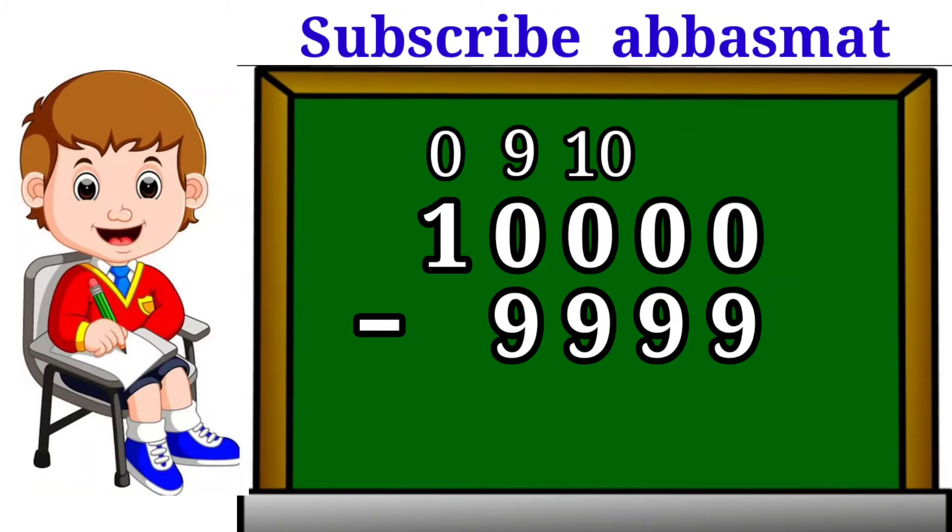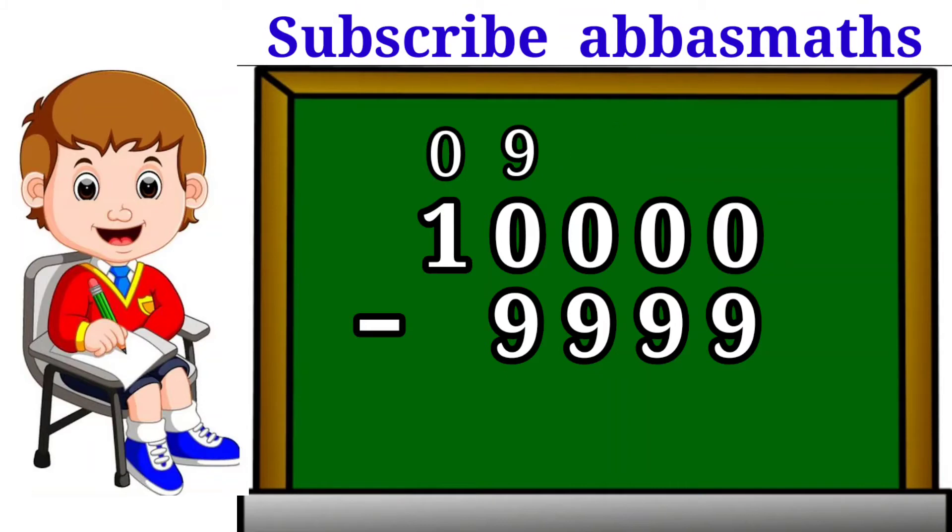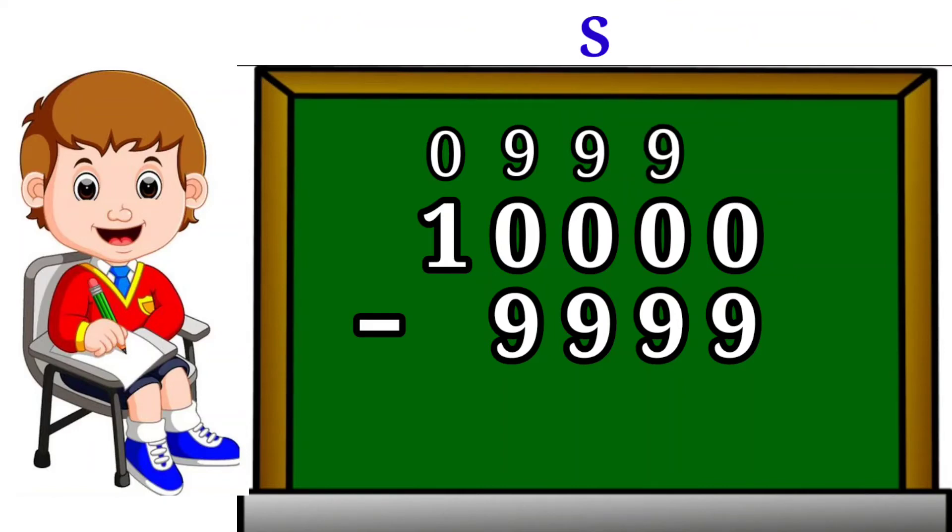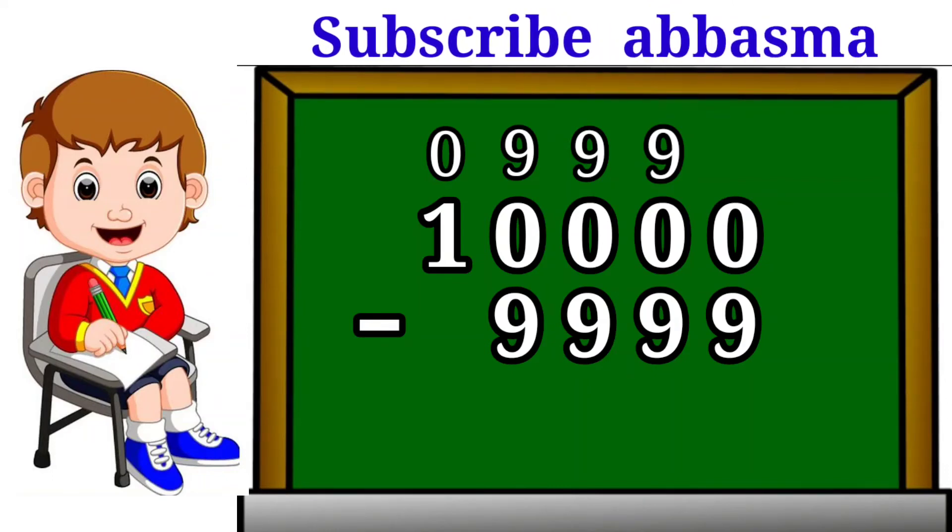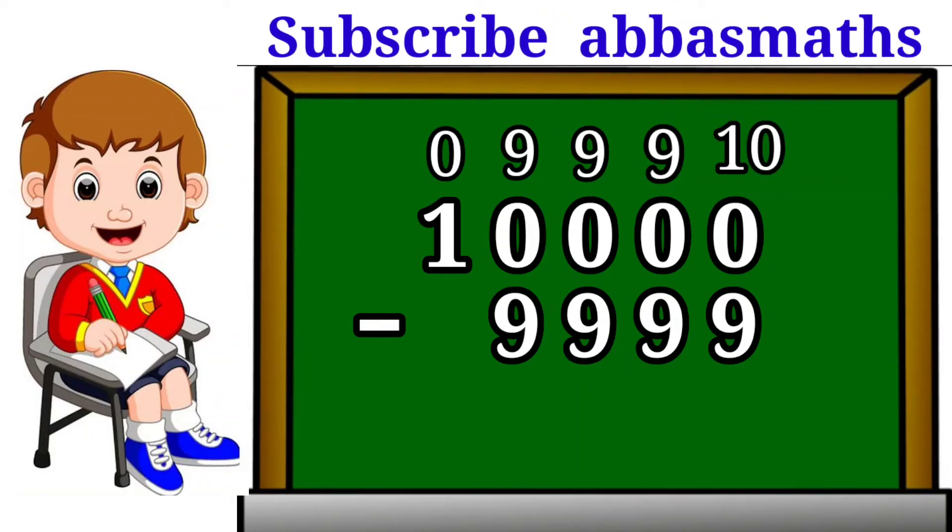Again we carry 1 from 10 towards right, it becomes 9 and the next number becomes equal to 10. Again 1 is carried from 10 towards right. After carrying, this 10 becomes 9 and the next number after carrying is here 10. Now we subtract 9999 from 10,000.